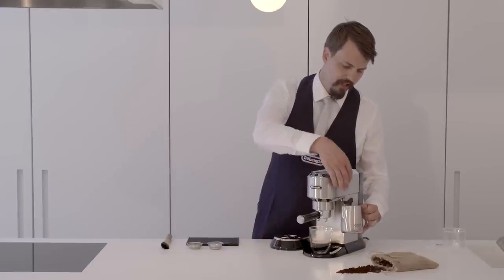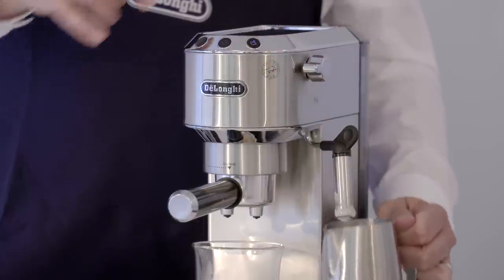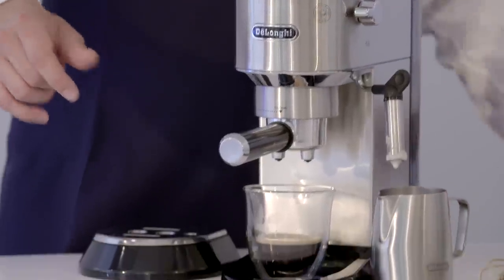When we get to a point where it's slightly too hot to touch, turn our steam arm off, put the jug down, and give the arm a quick wipe.